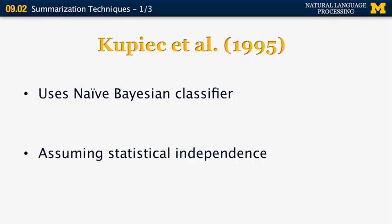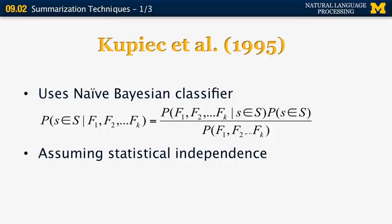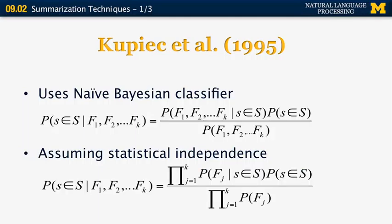Here's how a naive Bayes classifier works. You have features f1 to fk like the ones described. Little s is a specific sentence; capital S is the summary. We compute the probability that a sentence is included in the summary given its specific features. Using Bayes' formula, this converts to the probability of the features given the sentence is in the summary times the prior probability of the sentence being in the summary, divided by the prior probability of that feature set. Using statistical independence and the chain rule, this simplifies to the product of the probabilities of individual features for sentences that appear in the summary.